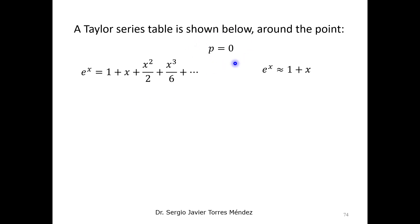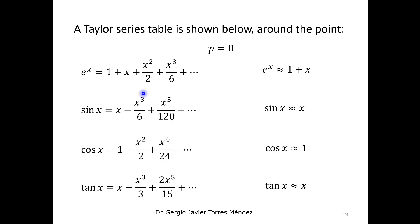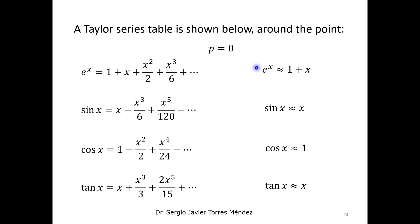If we select the operating point at zero, we have several common nonlinear functions and their linear approximations. For example, the sine, cosine, and exponential functions are nonlinear, but using only the linear components of the Taylor series we can obtain a linear approximation of each of these nonlinear functions.